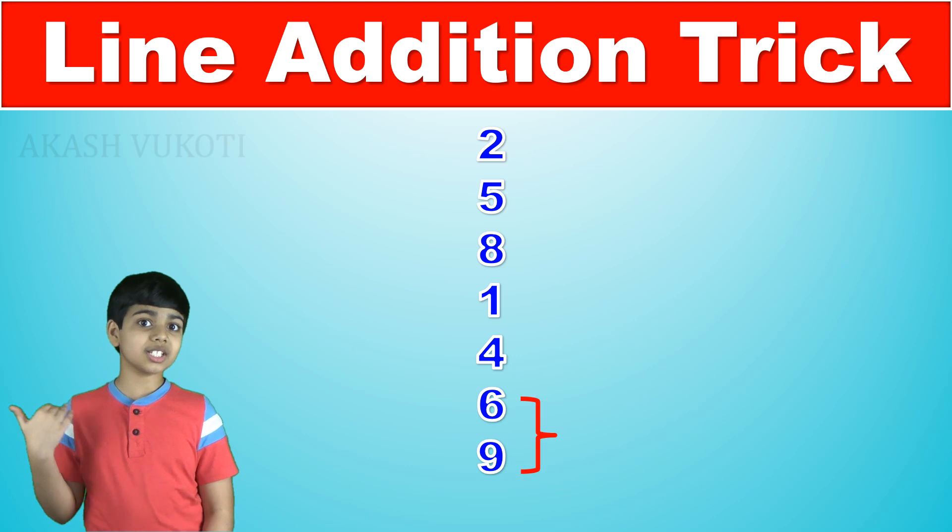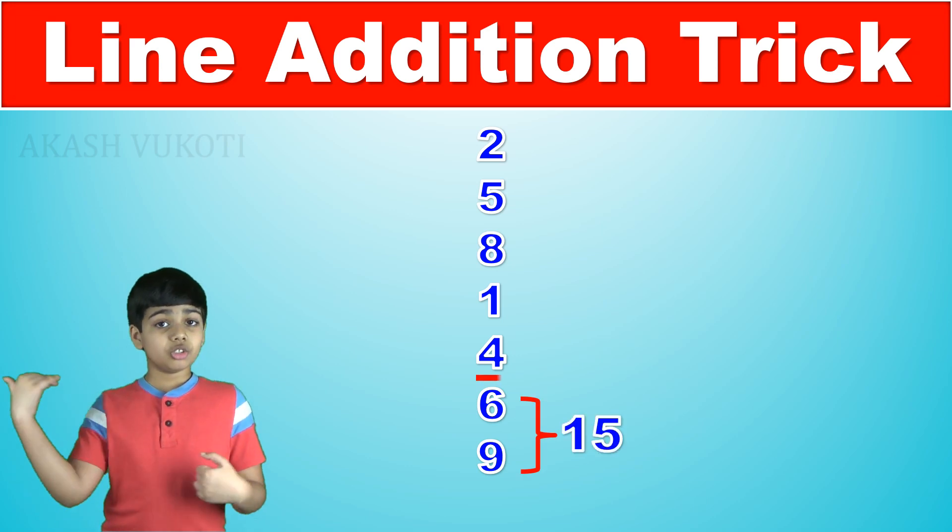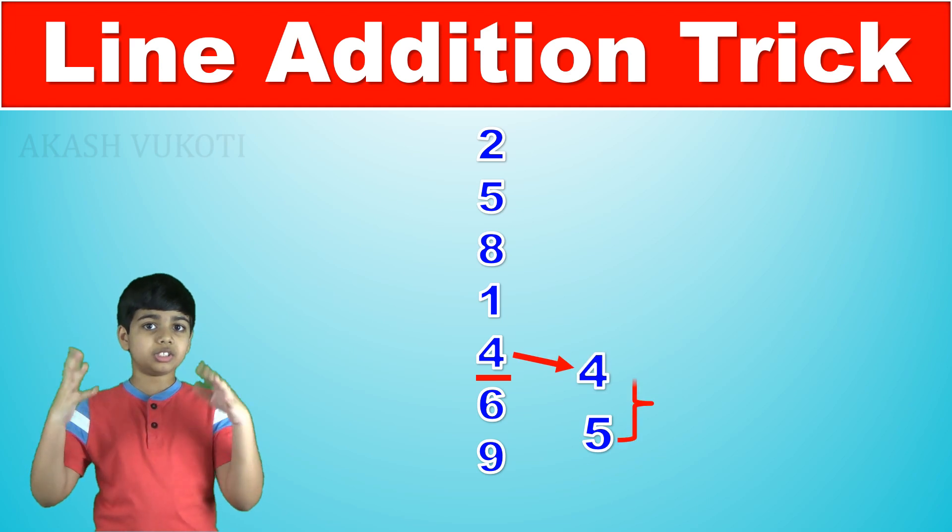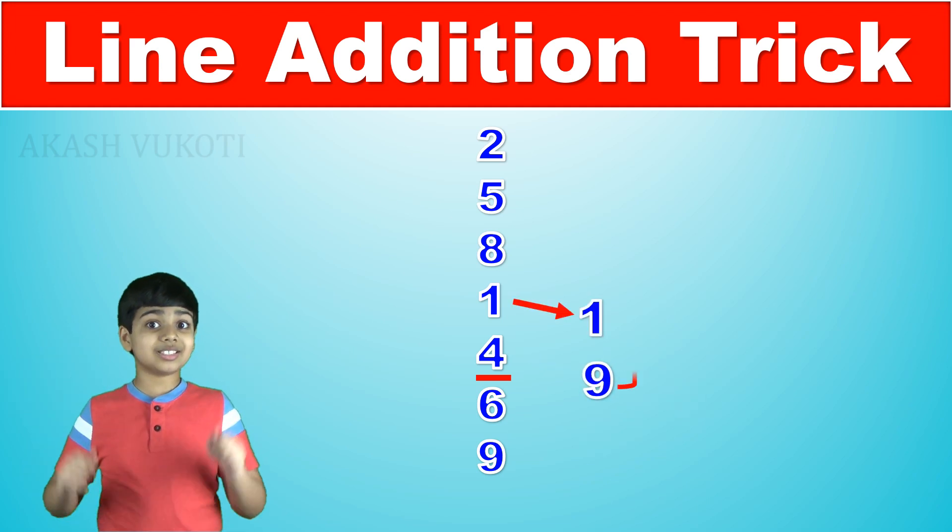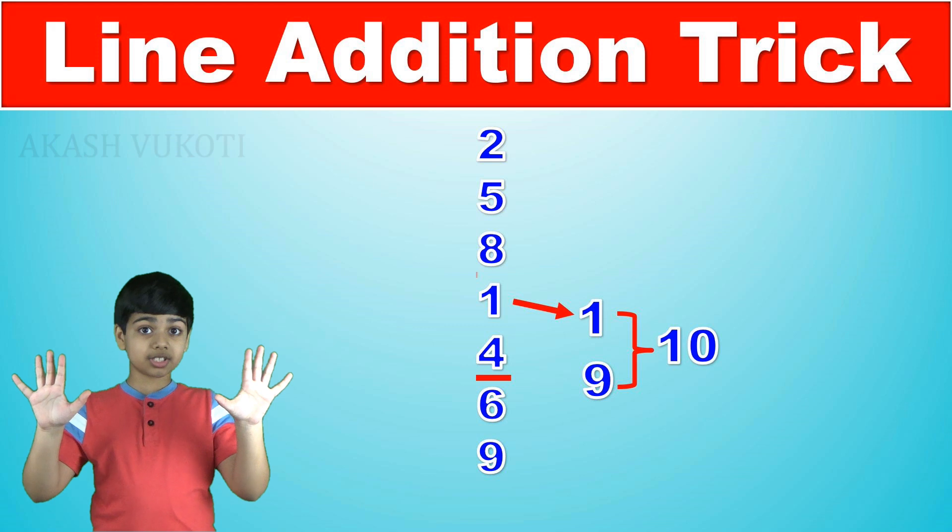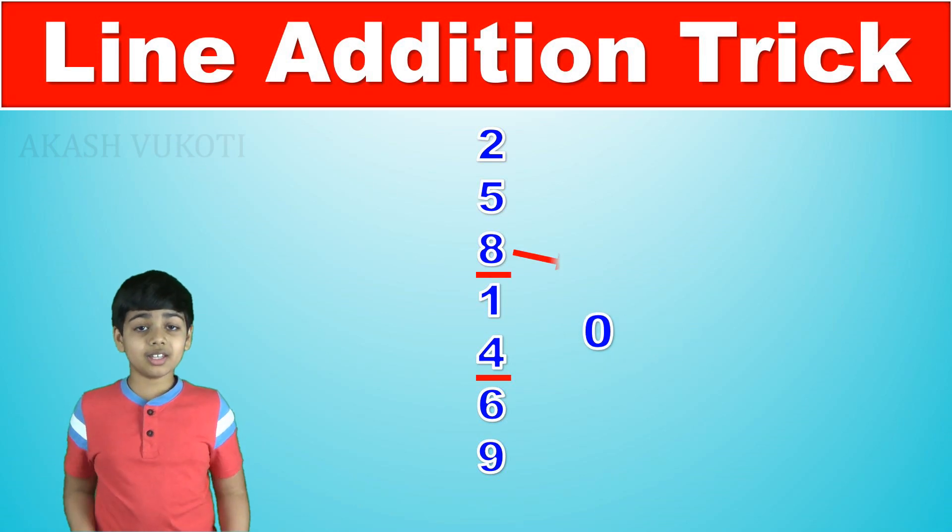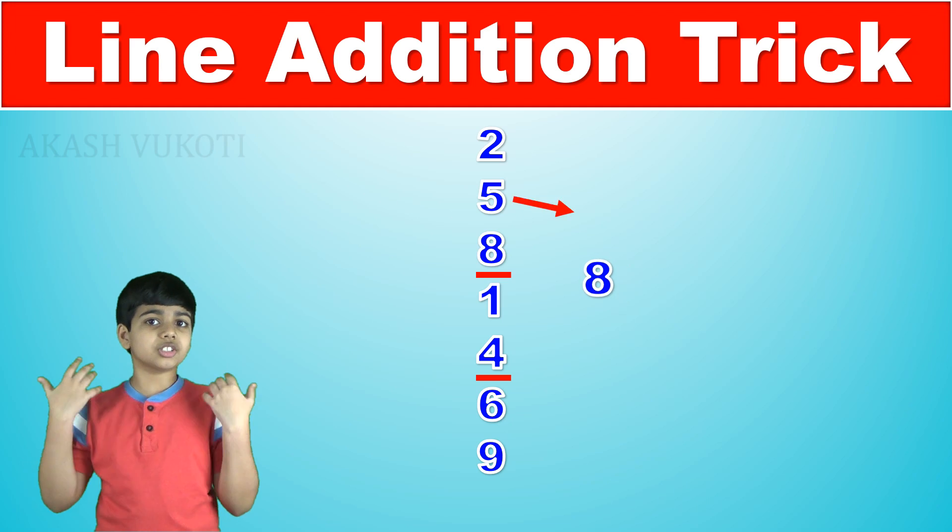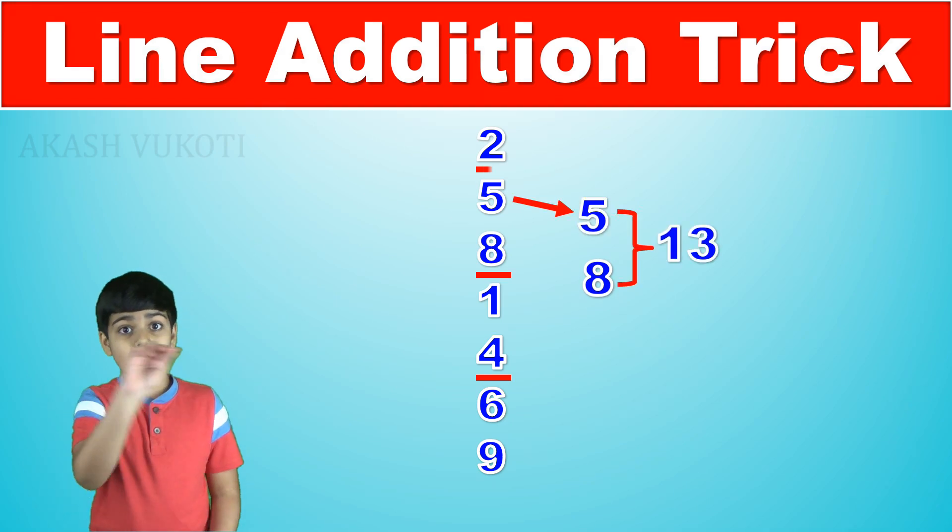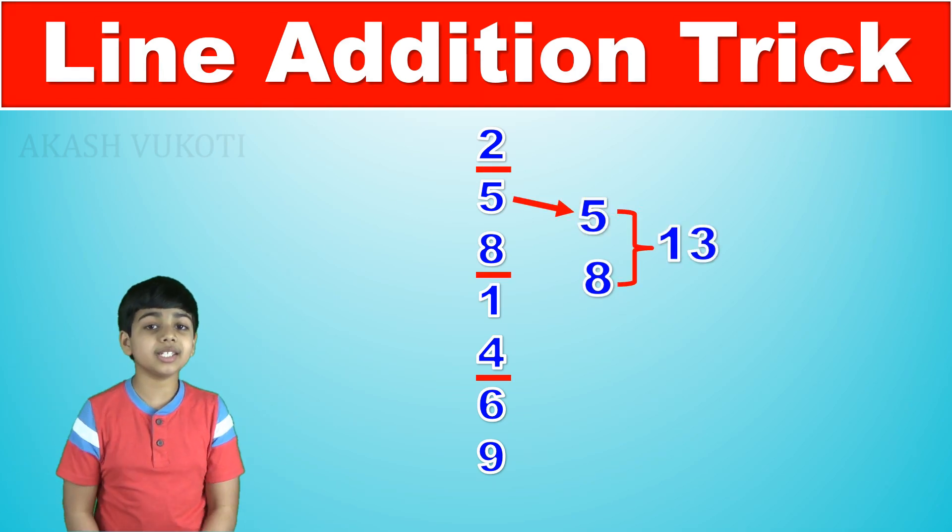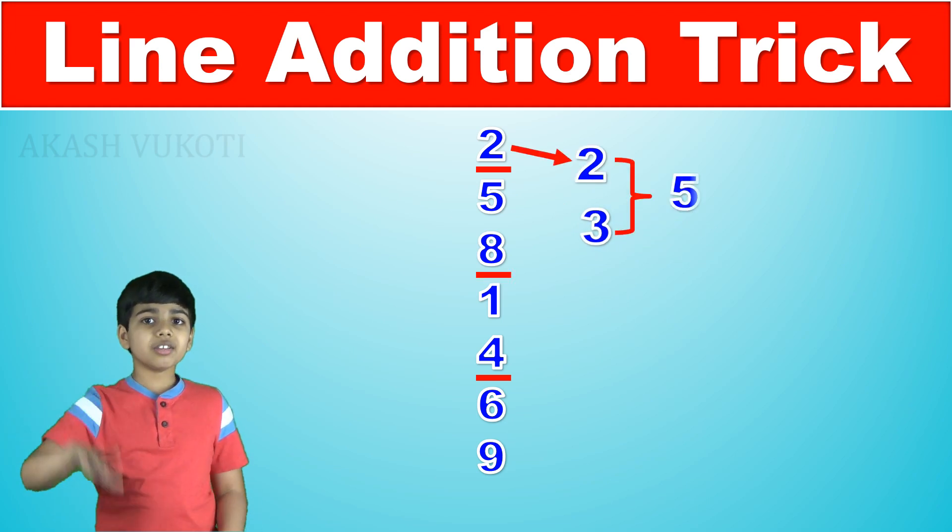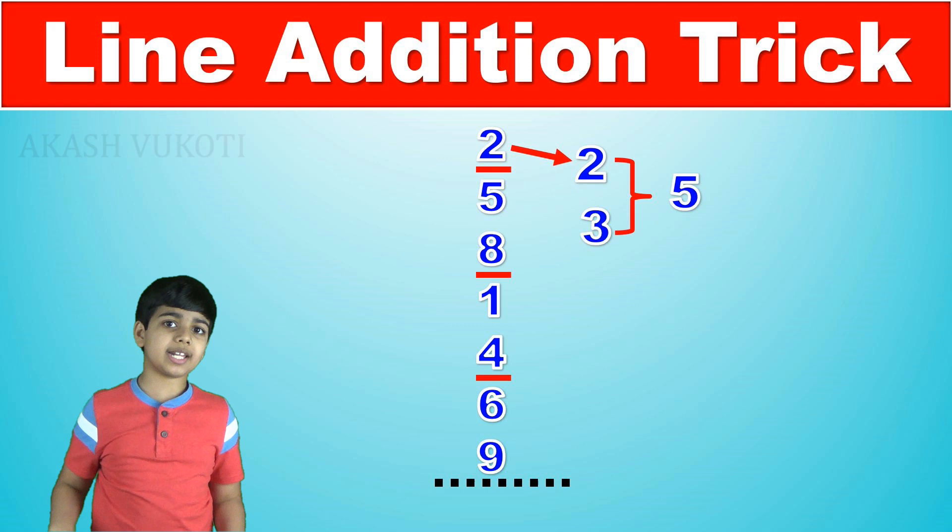First, 9 plus 6 is 15 so drop a 10 there, get 5. 5 plus 4 is 9 plus 1 is 10 so drop a 10 resulting in 0. And then we continue on, we get 8 plus 5 which is 13 so drop another 10 there, resulting in 3. And finally 3 plus 2 is 5 which because we have finished adding all the numbers, the last digit of our answer is 5.